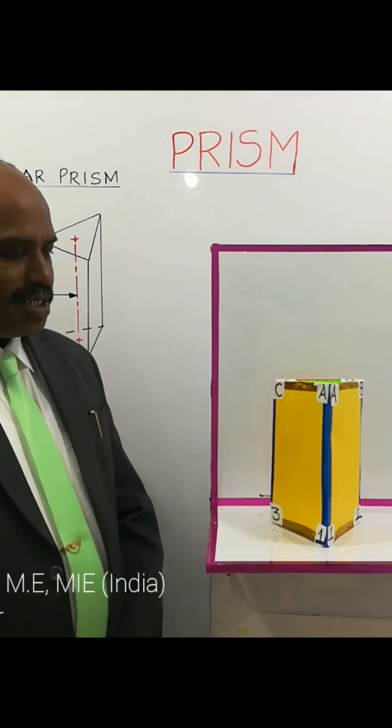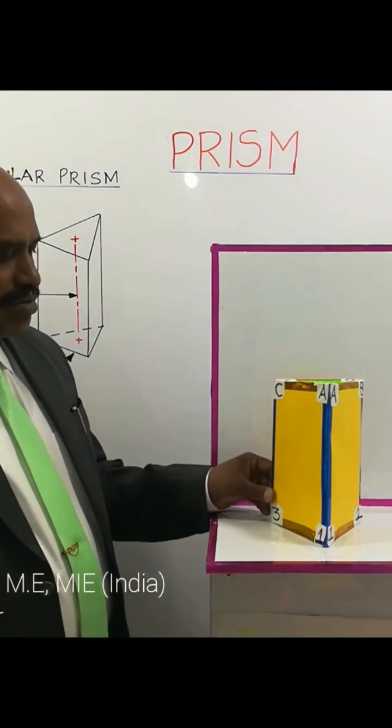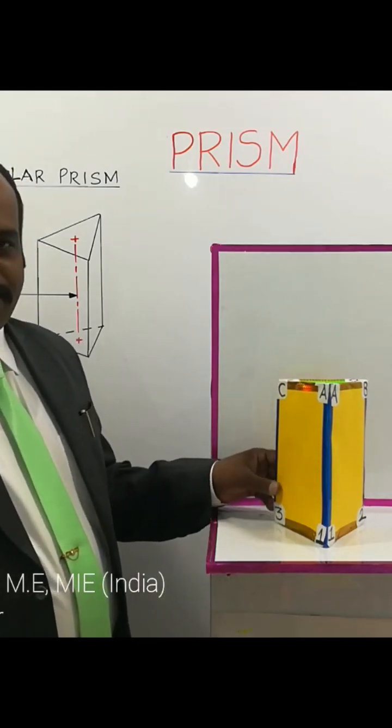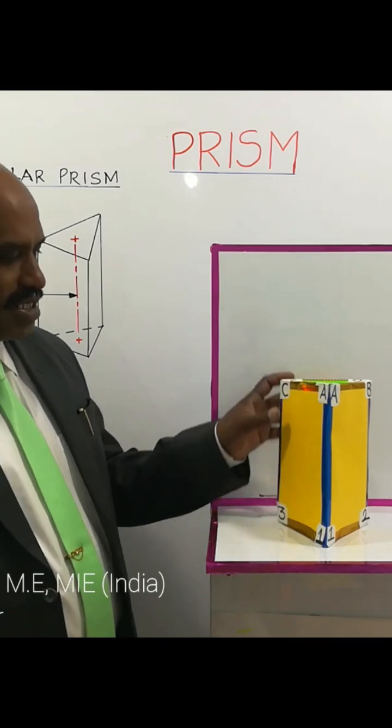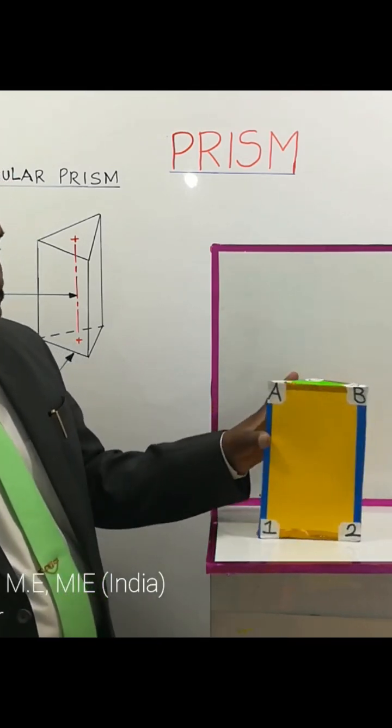This is called a prism. Here I have shown a prism called triangular prism — the name of the solid is triangular prism.